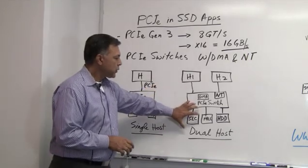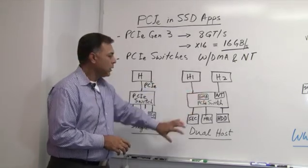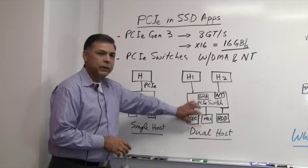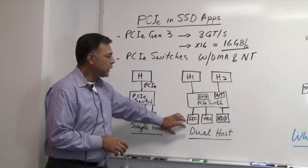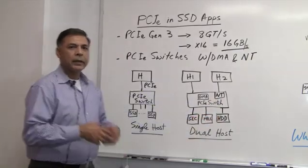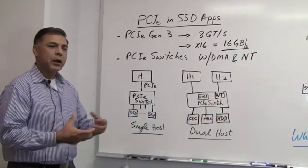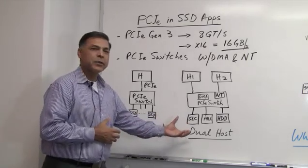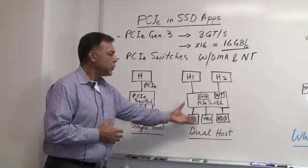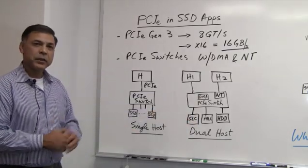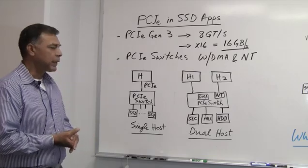The embedded features like DMA controller would allow users to move data from different IOs. For example, you want to move data from SLC to MLC or MLC to hard disk drive. As the data becomes less important for fast access, you can do that using the peer-to-peer capability of the PCI Express switches that are available today from PLX.